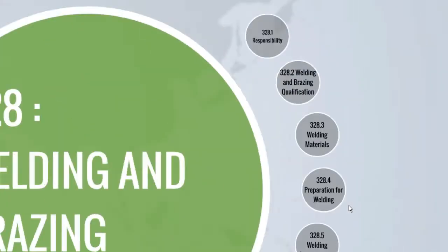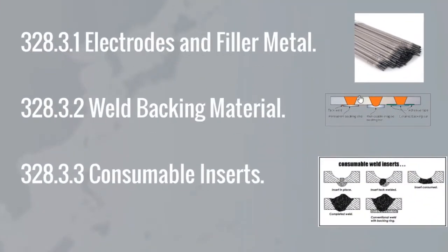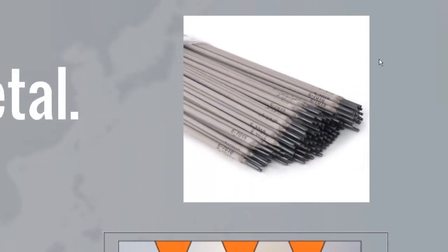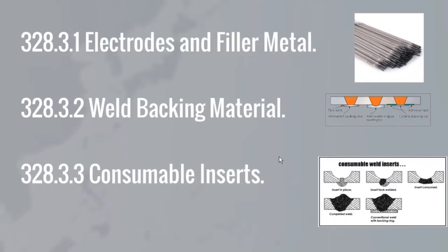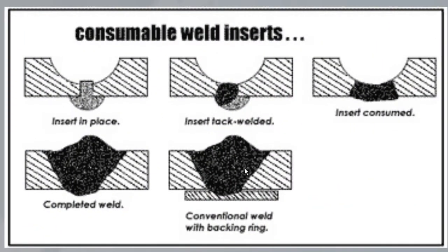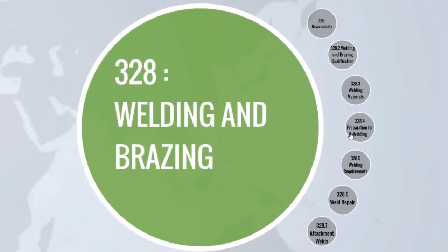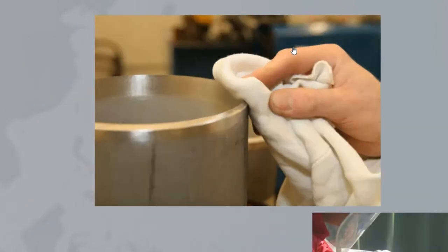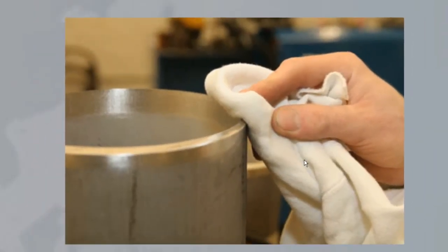Subparagraph 328.3 lists down the requirements of welding materials — electrodes and filler metal, weld backing material, and consumable inserts — in its three subsections. Preparation for welding, whereby requirements for cleaning, preparation, and alignment are detailed, is presented in subparagraph 328.4.